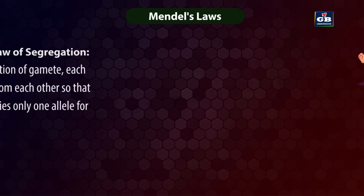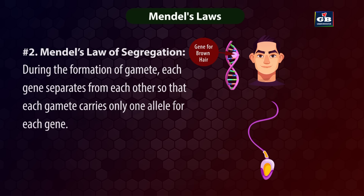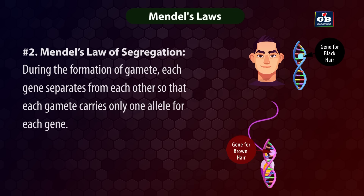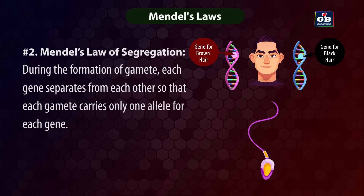Mendel's law of segregation: The parent cell has two genes for controlling a character, but when it forms gametes, each gamete carries only one allele for that character. For example, a man has two alleles for hair color — brown and black — but his sperm cells will carry either brown or black allele only. During gamete formation, each gene separates so that each gamete carries only one allele for each gene.